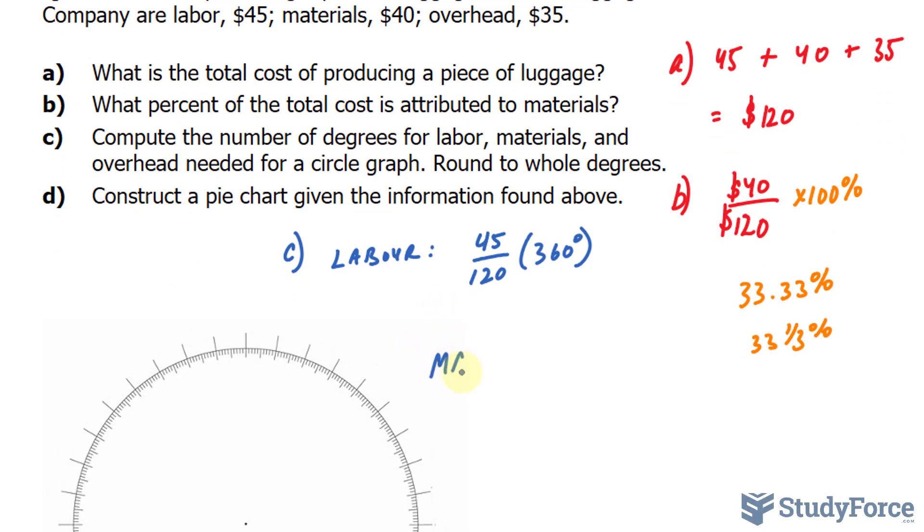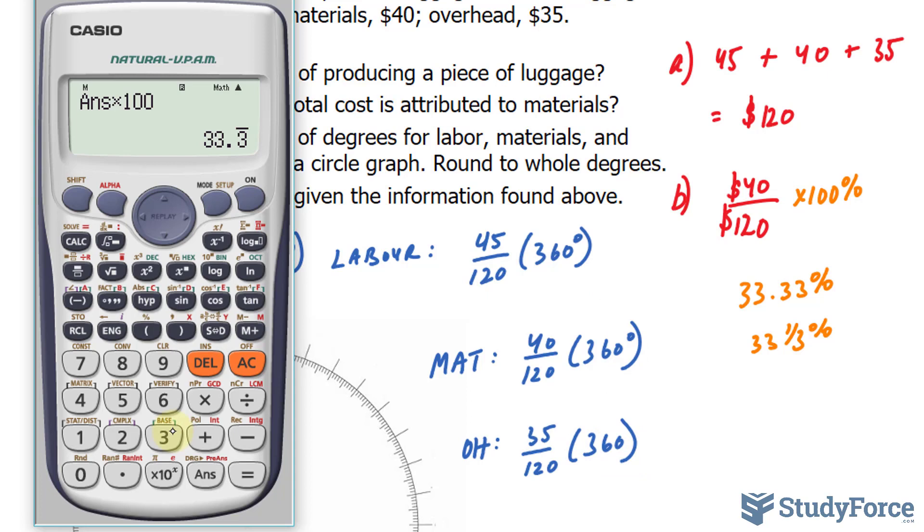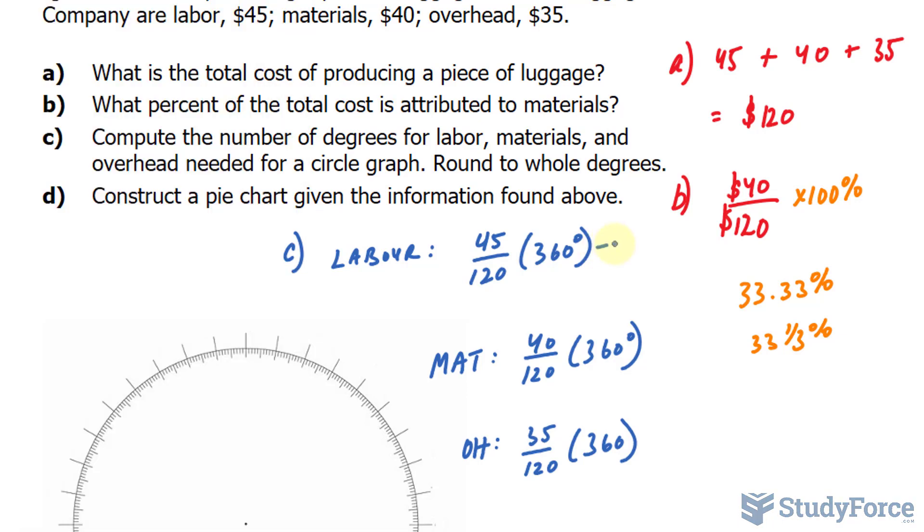I'll do the same thing for materials and overhead. For materials, I'll take 40 divided by 120, then multiply that by 360. And for overhead, it's 35 divided by 120 times 360. Let's use our calculator for all of these. 45 divided by 120 times 360 gives us 135. 135 total degrees represents labor.